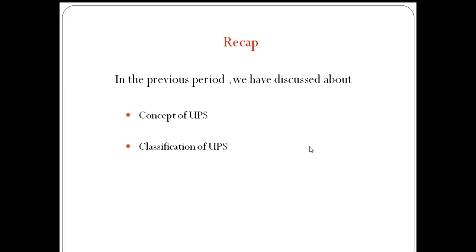After that, we covered the concept of UPS — uninterrupted power supply. In most homes, due to load shedding, inverters are installed. However, for critical loads requiring fast switching, UPS provides backup power. We discussed the main types of UPS — online UPS and offline UPS — and how to estimate the required rating of inverter battery UPS.